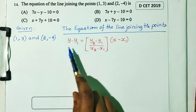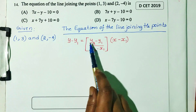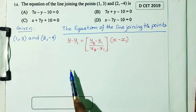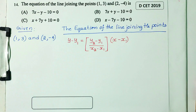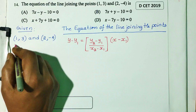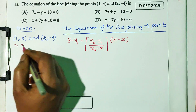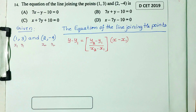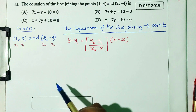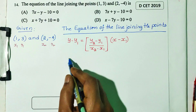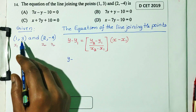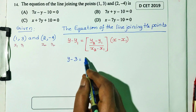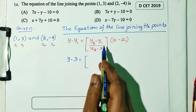The formula for equation of line joining two points is: y minus y1 equals (y2 minus y1) divided by (x2 minus x1), into x minus x1. The first point is x1 equals 1, y1 equals 3; second point x2 equals 2, y2 equals minus 4.